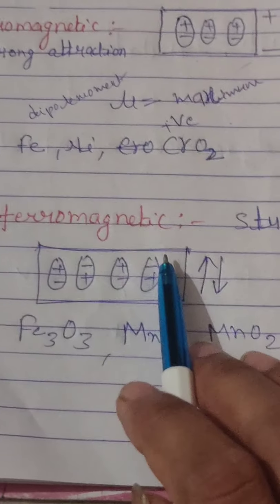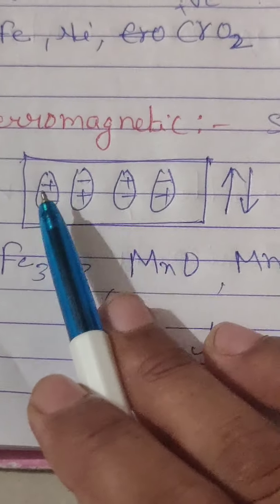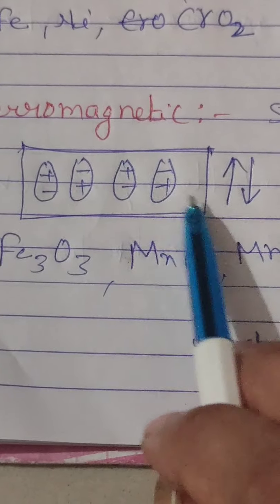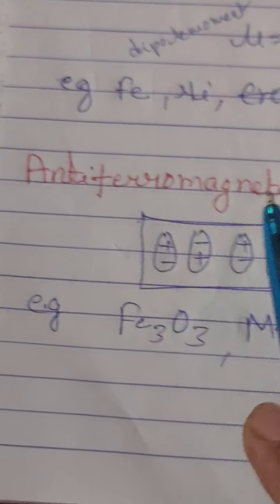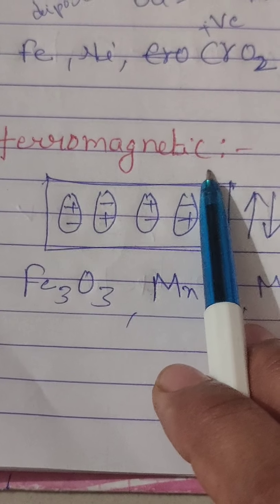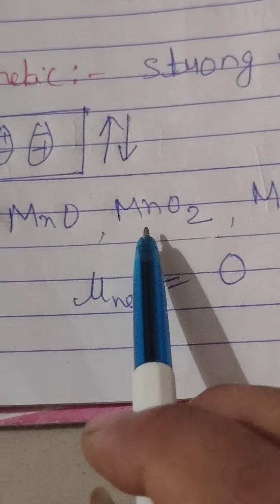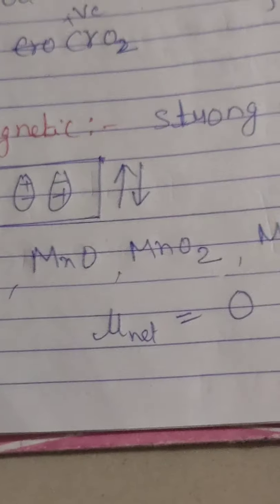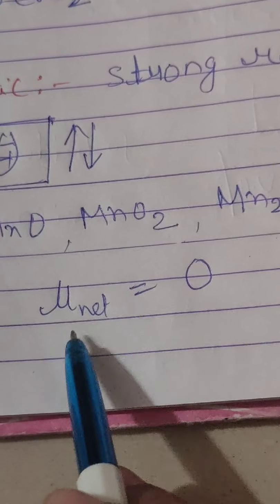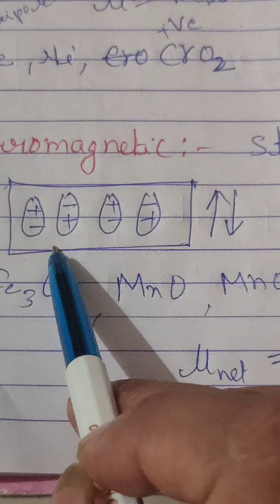Anti-ferromagnetic means that when placed in a magnetic field, the dipoles are arranged in opposite directions — alternating opposite alignment. Examples of anti-ferromagnetic materials are ferric oxide, magnesium oxide, and manganese dioxide.